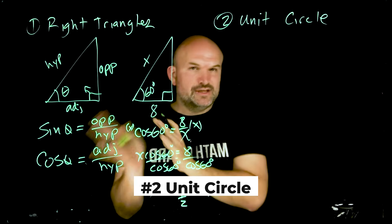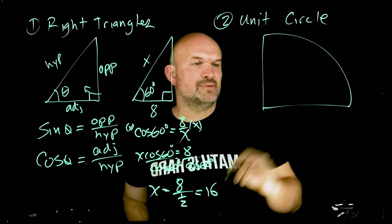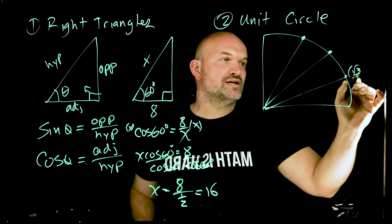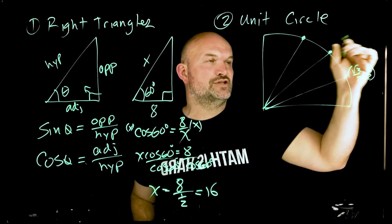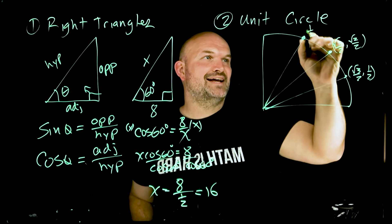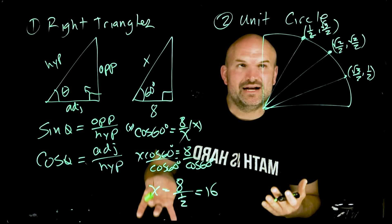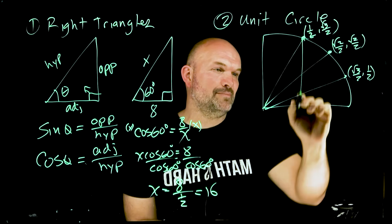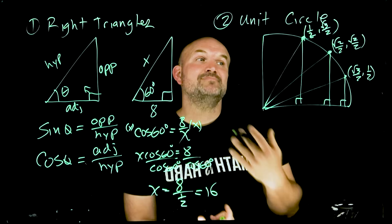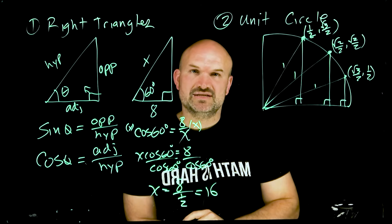The next thing you need to understand is sine and cosine when dealing with the unit circle. When we first talk about the unit circle, we focus on coordinate points in the first quadrant. Students sometimes ask: didn't you say sine and cosine only apply to right triangles? Well, the unit circle is made up of right triangles — special right triangles — and on the unit circle the hypotenuse is always 1.